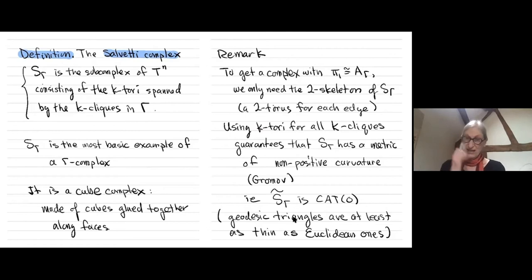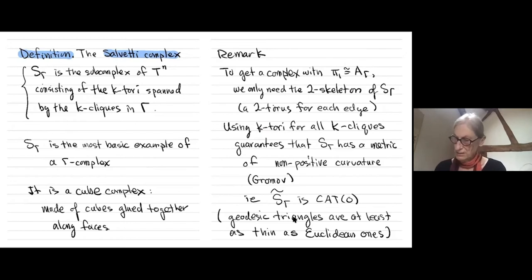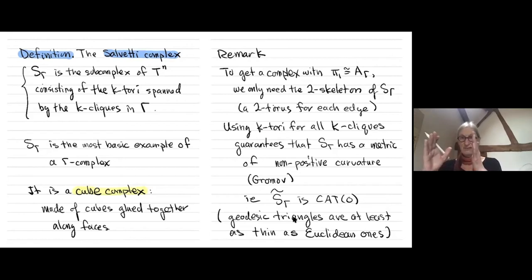The Salvetti complex is the subcomplex of the n-dimensional torus consisting of the k-tori spanned by the k-cliques in gamma. This is the most basic example of a gamma complex, and it's a cube complex — made of cubes glued together along faces.